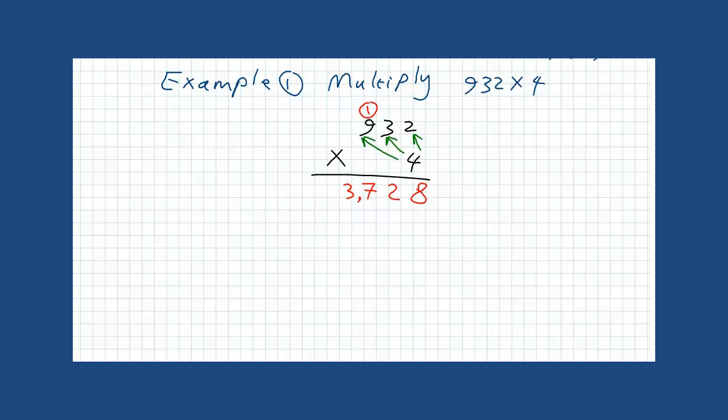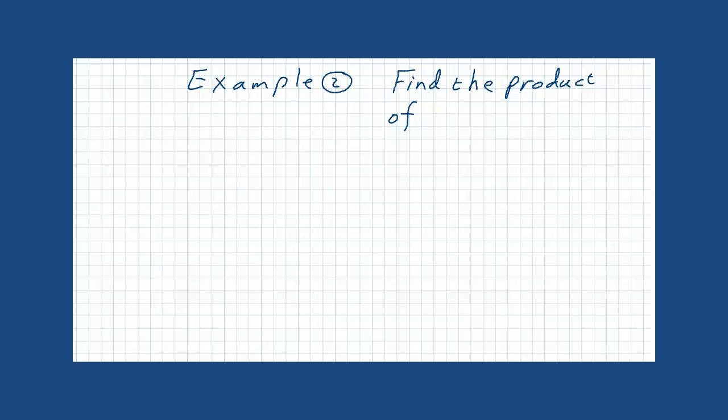Let us take now example 2. Find the product of 358 and 18. In the same way, we will write the operation vertically. We will start multiplying 8 with every digit in the first number. So, 8 times 8 is 64. We will put 4 and 6 up here. 8 times 5 is 40.